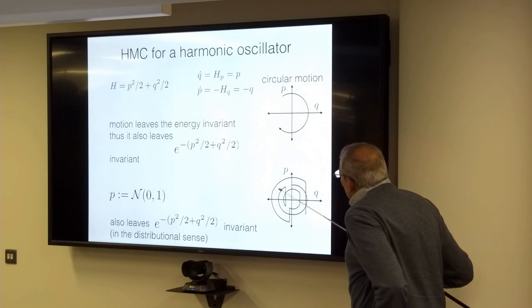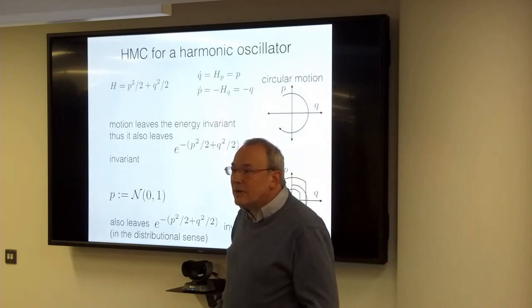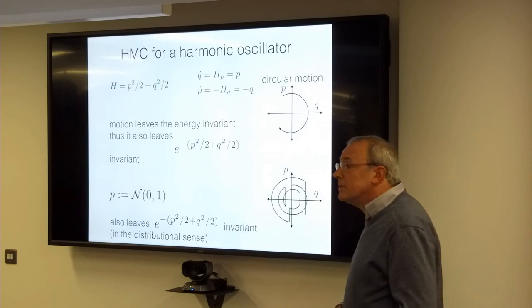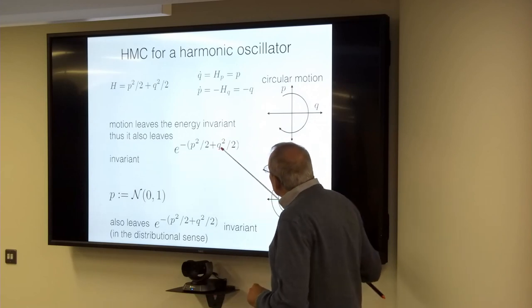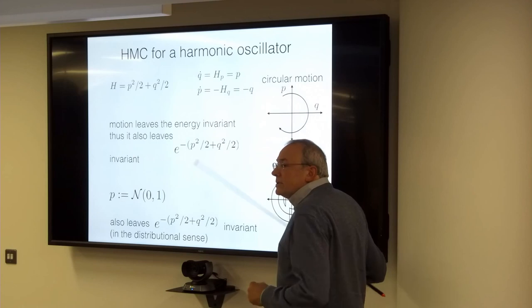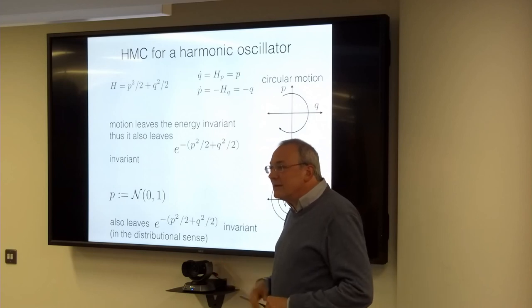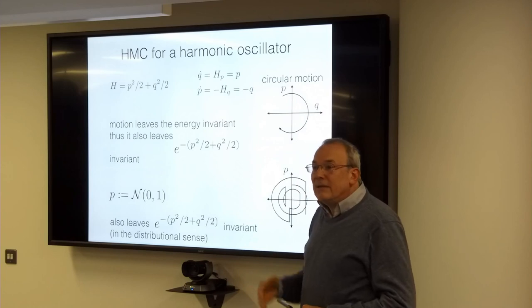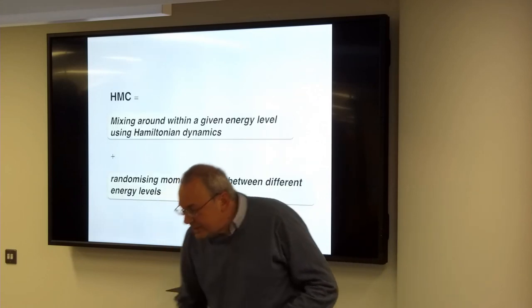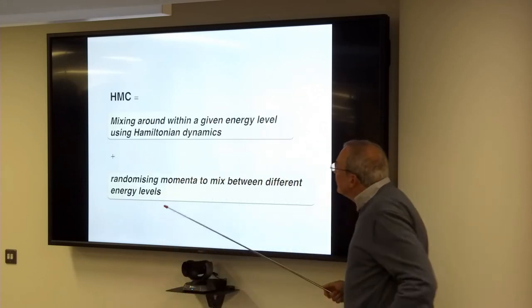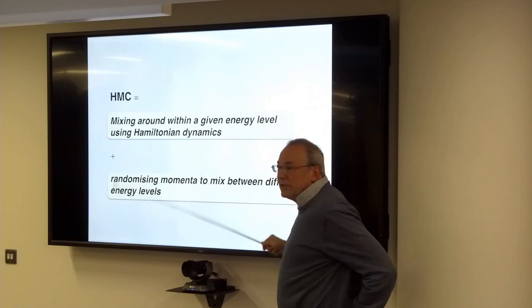In HMC, you automatically get correct sampling in the q direction. The only place you really need to do sampling is in the momentum p, and everything else comes from the magic of Metropolis-Hastings. HMC is about mixing within a given energy level using Hamiltonian dynamics, together with randomizing momenta to mix between different energy levels. That's really what it's about.